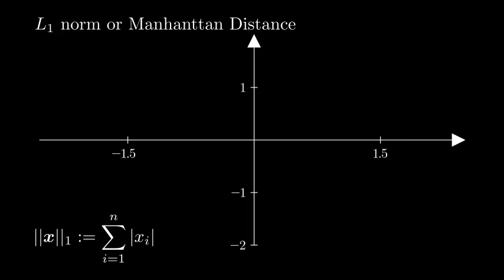Let us consider the unit distance for L1 norm in R2 space. Following is the representation of L1 norm, which is square rotated by 45 degrees.